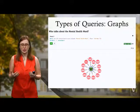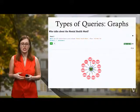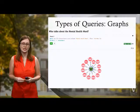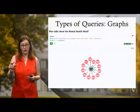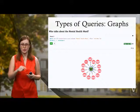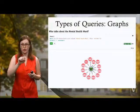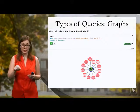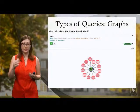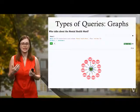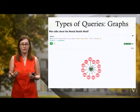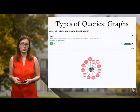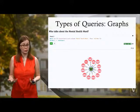This first query displays as a graph and the question is: who talks about the mental health ward? The query essentially takes the node for mental health ward and determines what other nodes have relationships to it. Around the edge in pink you'll see a list of names, and people can see those names and know that if they're interested in the mental health ward, they can access those transcripts on Omeka and read about it.